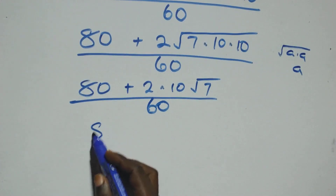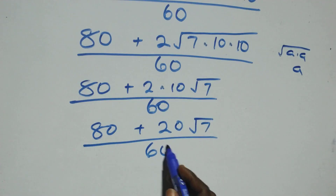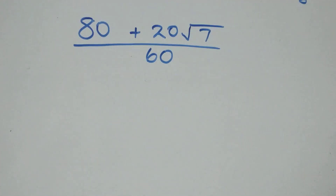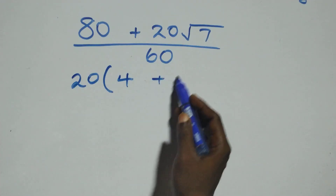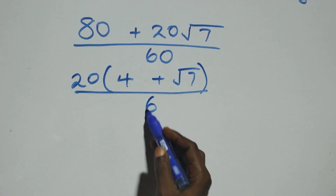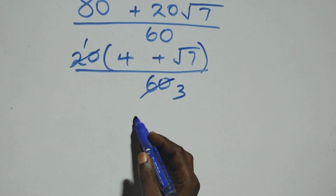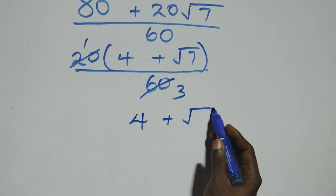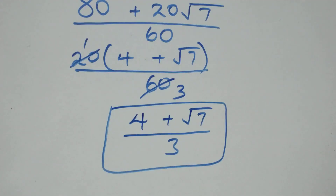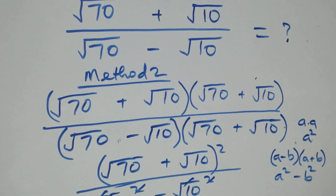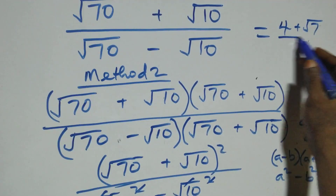That is, 80 plus 20√7 over 60 — here, 20 is a common factor, so we have 20 into brackets: 4 left here, then plus √7, over 60. And here, 20 and 60 give 3, so what we have becomes (4 + √7) over 3, the same result as in the first method. Therefore, we can conclude that the simplified form of this given problem is (4 + √7) over 3.